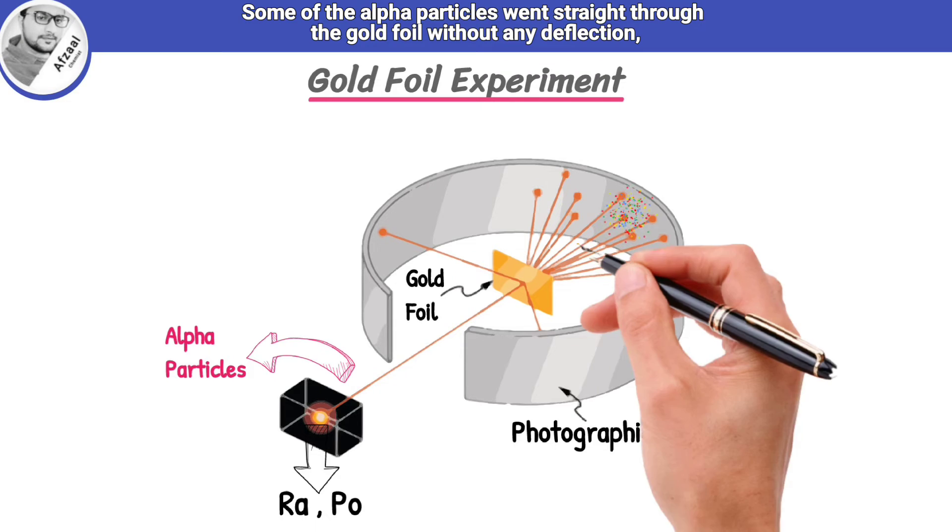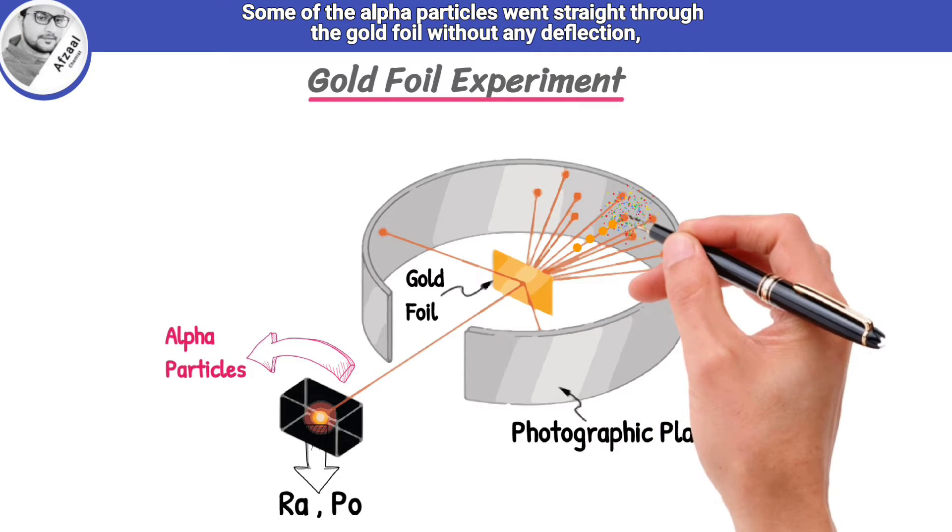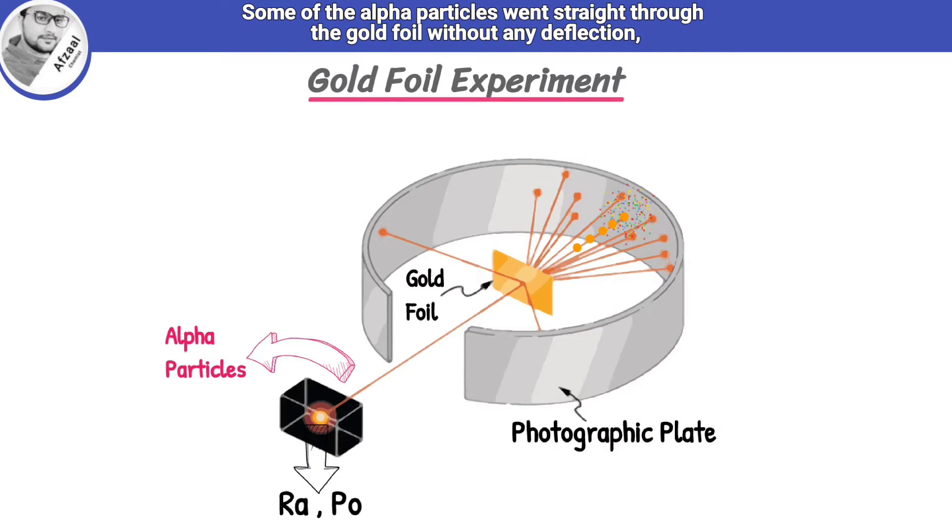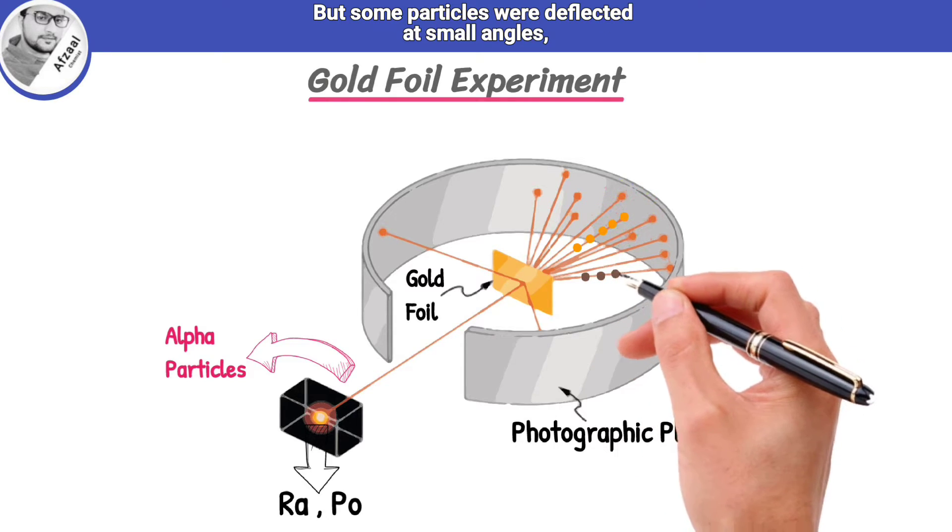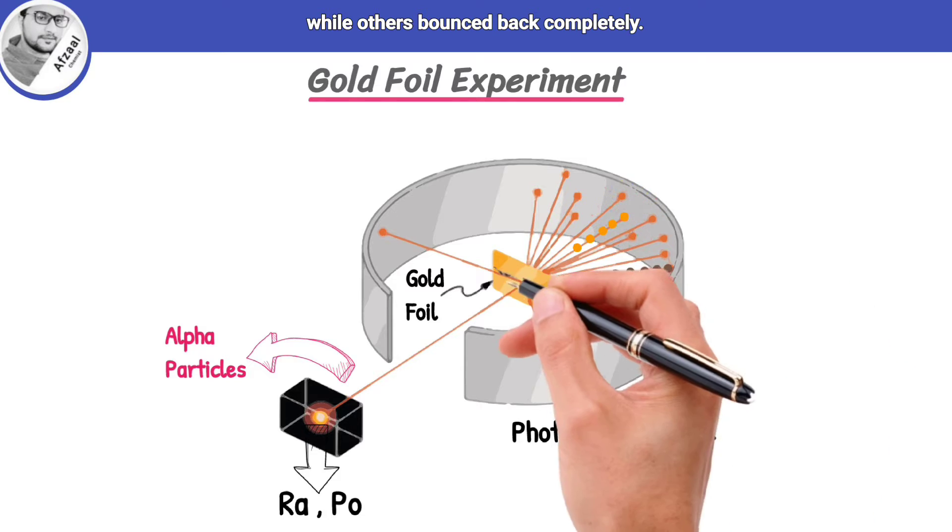Some of the alpha particles went straight through the gold foil, without any deflection, just as predicted by Rutherford. But some particles were deflected at small angles, while others bounced back completely.